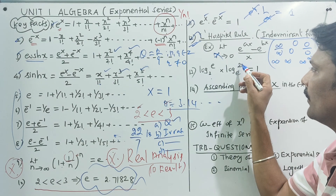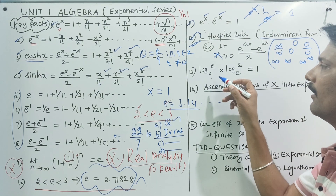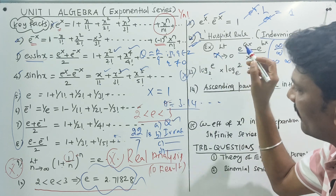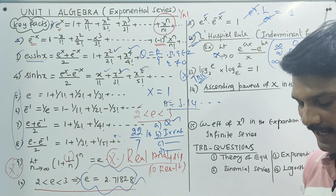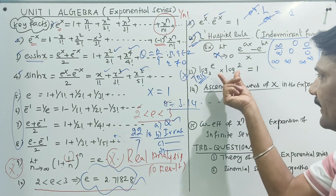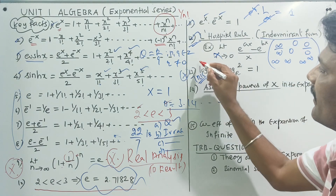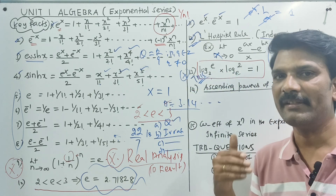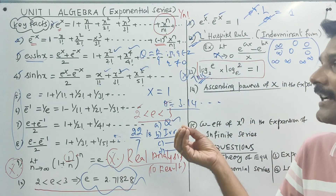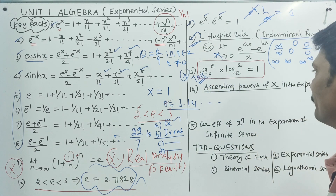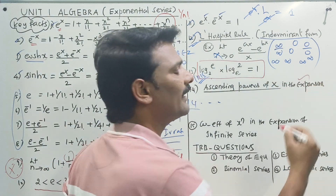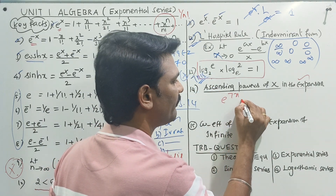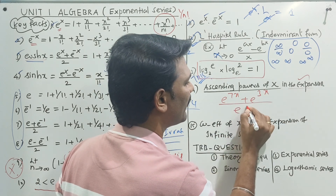Log e base 2 into log 2 base e — cancel gives 1. Ascending powers of x in the expansion of something: e power 7x plus e power 3x divided by e power 9x.